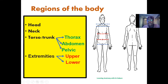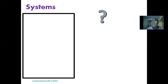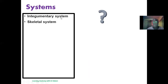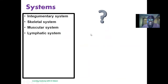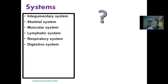The body is also made up of different systems. We have the integumentary system, which involves the skin and its associated structures. We have the skeletal system, which is the bony configuration of the body. We have the muscular system. We have the lymphatic system, which helps to maintain fluid balance by draining lymph within tissues and also provides immune function. We have the respiratory system, which involves the intake of oxygen and breathing out of carbon dioxide.